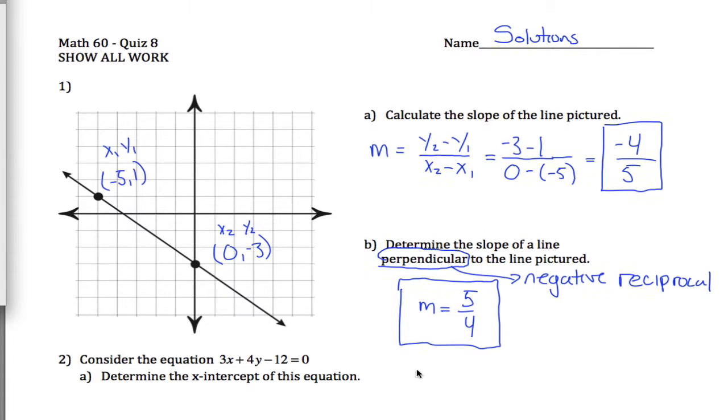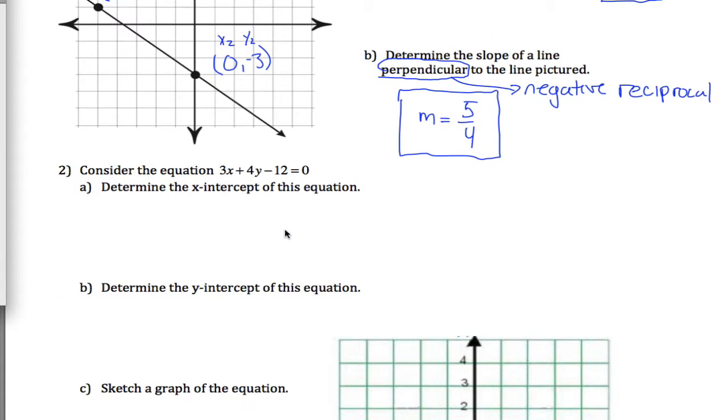I guess we're moving on. Number 2 gives us an equation, 3x plus 4y minus 12 equals 0, and asks us to find the x-intercept of this equation. What you need to know is to find the x-intercept, x-intercept happens when y equals 0. So if y equals 0, this just goes away. 4 times 0 is 0, so the equation that I get is 3x minus 12 is equal to 0. If I could solve this for x, I'd have the x-intercept.